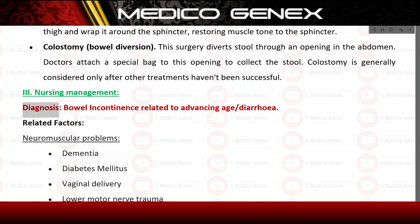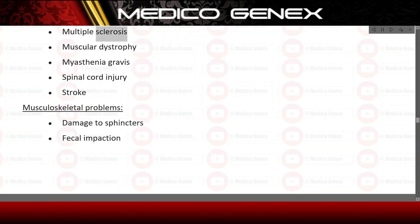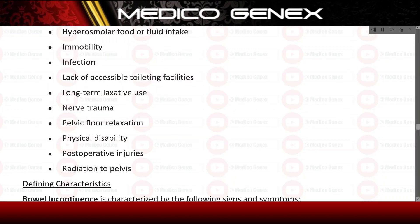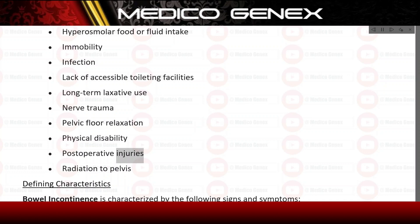Nursing management. Nursing diagnosis: bowel incontinence related to advancing age and diarrhea. Related factors include neuromuscular problems, dementia, diabetes mellitus, vaginal delivery, lower motor nerve trauma, multiple sclerosis, muscular dystrophy, myasthenia gravis, spinal cord injury, stroke, musculoskeletal problems, damage to sphincters, fecal impaction, hyperosmolar food or fluid intake, immobility, infection, lack of accessible toileting facilities, long-term laxative use, nerve trauma, pelvic floor relaxation, physical disability, postoperative injuries, and radiation to pelvis.